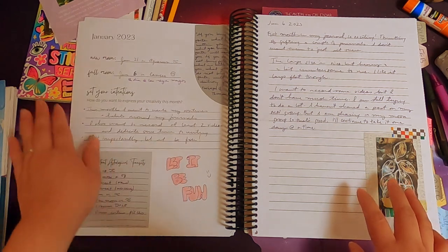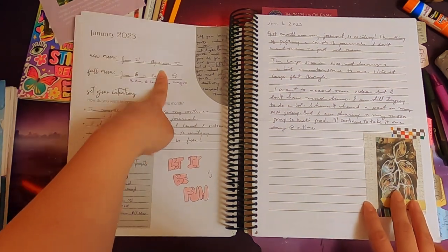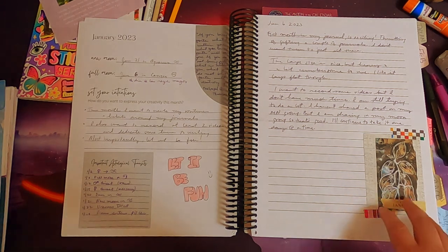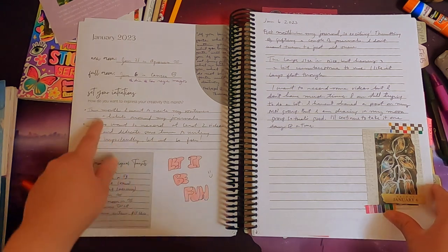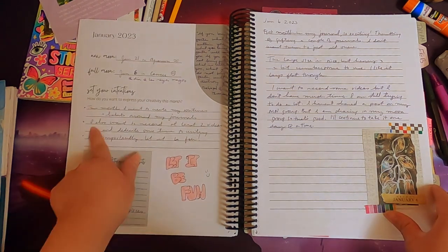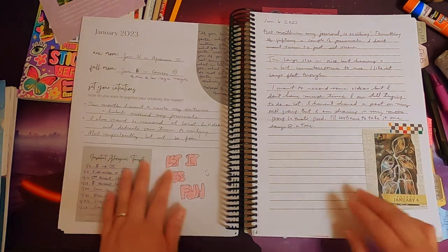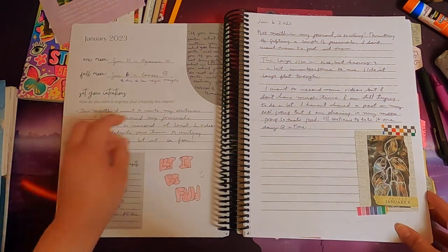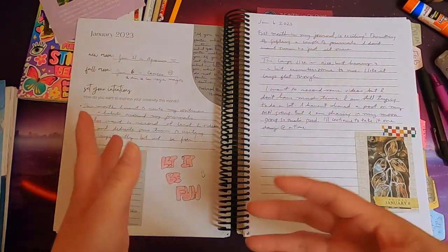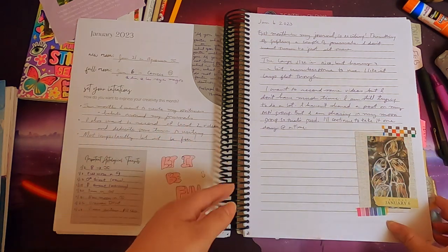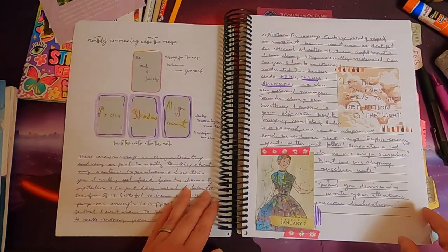Then it has some information about how to create a ritual and a sacred space for your creativity. Then we get into the monthly pages. This is the January page, there's a space for you to write about the date and sign of the new moon as well as the full moon, and you can set your intentions for the month.